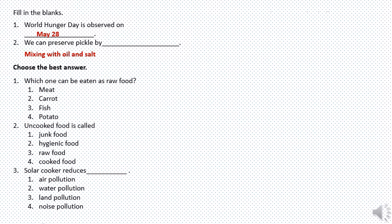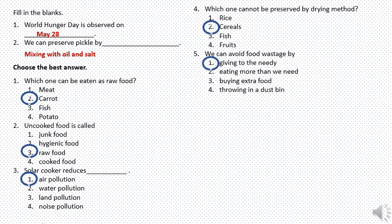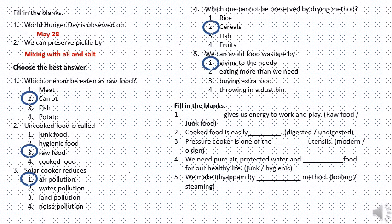Choose the best answer. Which one can be eaten as raw food? Answer: carrot. Uncooked food is called raw food. Solar cooker reduces air pollution. Which one cannot be preserved by drying method? Cereals. We can avoid food wastage by giving to the needy. Raw food gives us energy to work and play. Cooked food is easily digested. Pressure cooker is one of the modern utensils. We need pure air, protected water and hygienic food for our healthy life. We make idiyappam by steaming method.